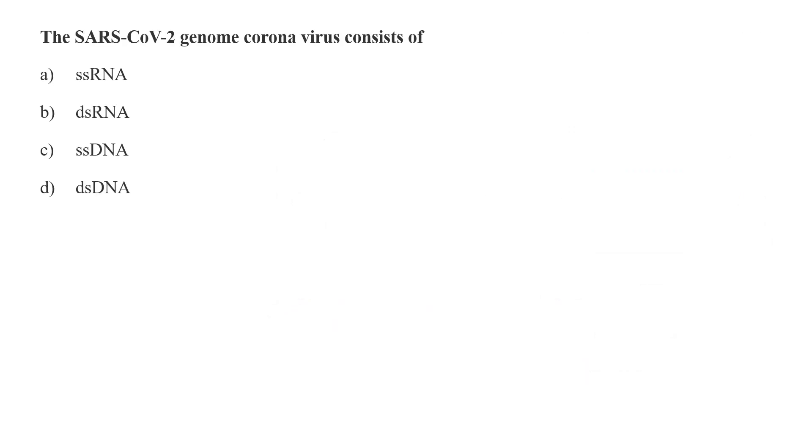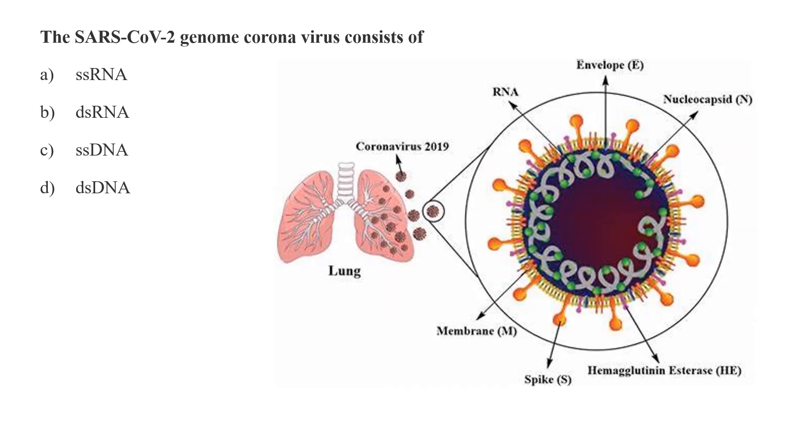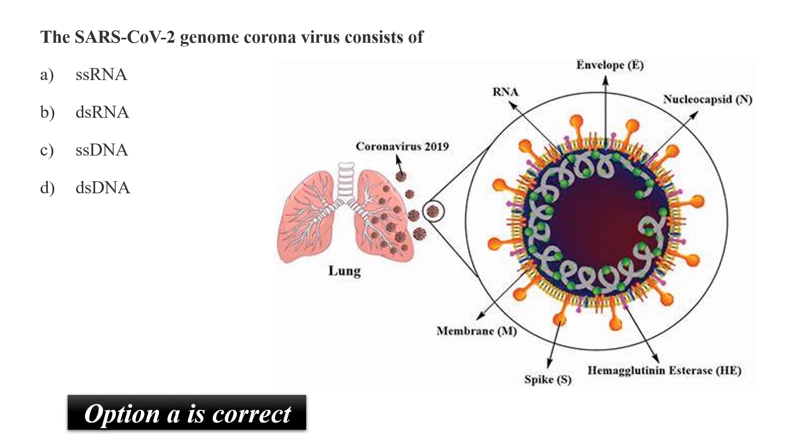The SARS-CoV-2 genome coronavirus consists of single-stranded RNA, double-stranded RNA, single-stranded DNA, or double-stranded DNA? As we know that COVID-19 virus or more commonly called as coronavirus has single-stranded RNA as their genetic content and it uses the similar retroviral strategy to survive and propagate. So SARS-CoV-2 genome is a single-stranded RNA virus genome.